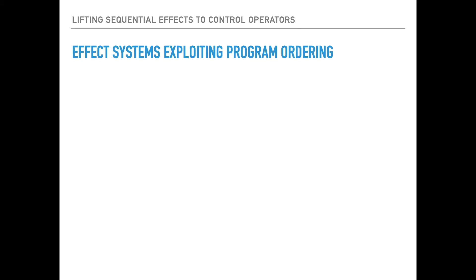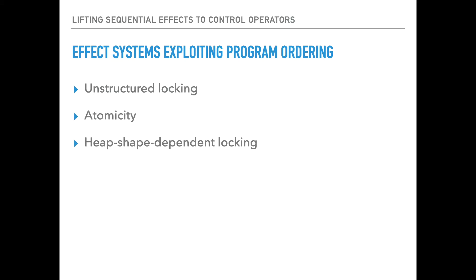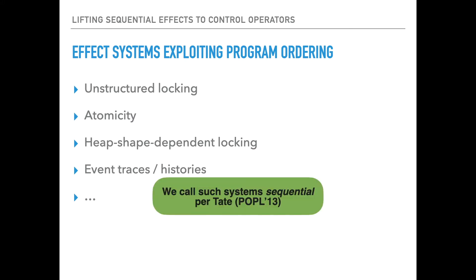I spend a lot of time thinking about a class of effect systems that take advantage of program ordering information. So unlike something like Java's checked exceptions, which really doesn't care if you throw this exception or that exception first or do other stuff in between, there's a broader class of effect systems that can help us solve problems like keeping track of lock ownership in the presence of unstructured locking, so explicit lock acquisition and release, tracking atomicity information, heap shape dependent locking information, or a whole slew of related systems which keep track of various forms of program histories to make sure programs basically are doing things in certain orders. There are many more such systems that take advantage of ordering, which I'm going to call sequential following some terminology Ross Tate set out in 2013.